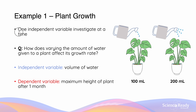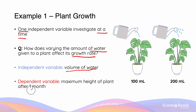It's important that only one independent variable is investigated at a time. Our revised question is: how does varying the amount of water given to a plant affect its growth rate? We're choosing volume of water as our independent variable. Our dependent variable might be the maximum height of the plant after one month, because the height of the plant after one month is going to depend on the volume of water used to water the plant.